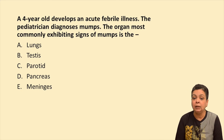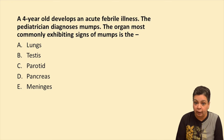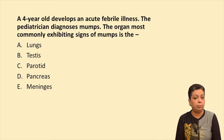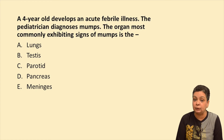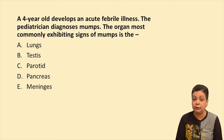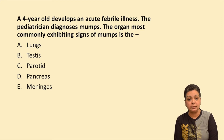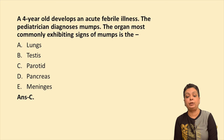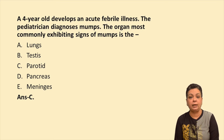Question: A four-year-old develops an acute febrile illness and the pediatrician diagnoses mumps. The organ most commonly exhibiting signs of mumps would be which of the following? Options: lungs, testes, parotids, pancreas, and meninges. The answer is obviously parotitis — the non-suppurative swelling of the parotids — which is the most common presentation. The answer is C.